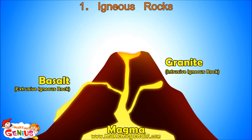So there are two main types of igneous rocks: ones that are formed when magma comes out, which are basalt, and others when magma cools down under the surface of the Earth — these are granite rocks.